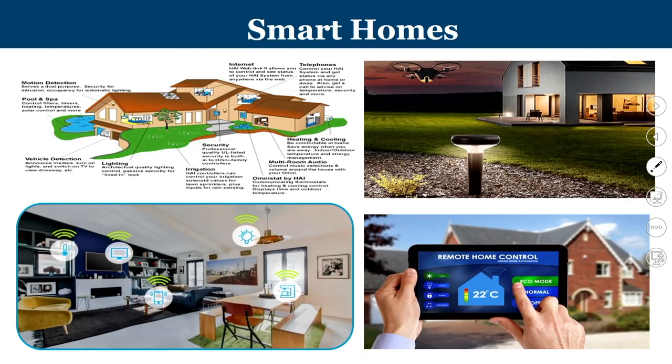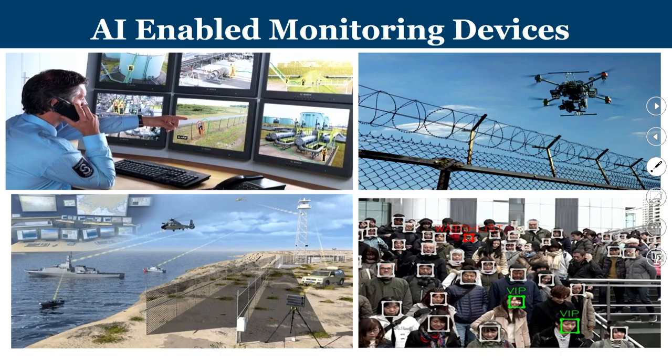Smart homes allow many sophistications in the places we live and the localities we move around. Sensors and sensor-based data are analyzed by a backend computing system that can automate activities otherwise requiring human intervention. With the prominence of artificial intelligence, surveillance, personal identification, biometric-based access mechanisms, and security protection are gaining significance. AI-enabled drones can operate in terrains where physical manning is very difficult, making our lives more comfortable.